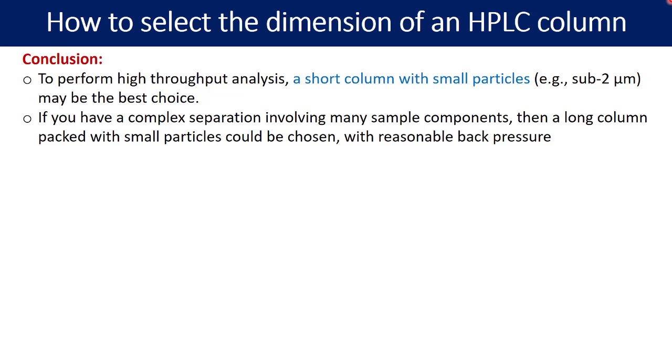If you have a complex separation involving many sample components present into a sample, then a long column packed with small particle size could be chosen with reasonable back pressure. With the increase in the column length, we can expect the increase into the back pressure. In case if you have the method development for related substances involving many components, then you can go with the little long column, but always maintain or select the smaller particle size. Maybe 150 mm, 3 micron, something like that - 150 mm is the length and 3 micron is the particle size.